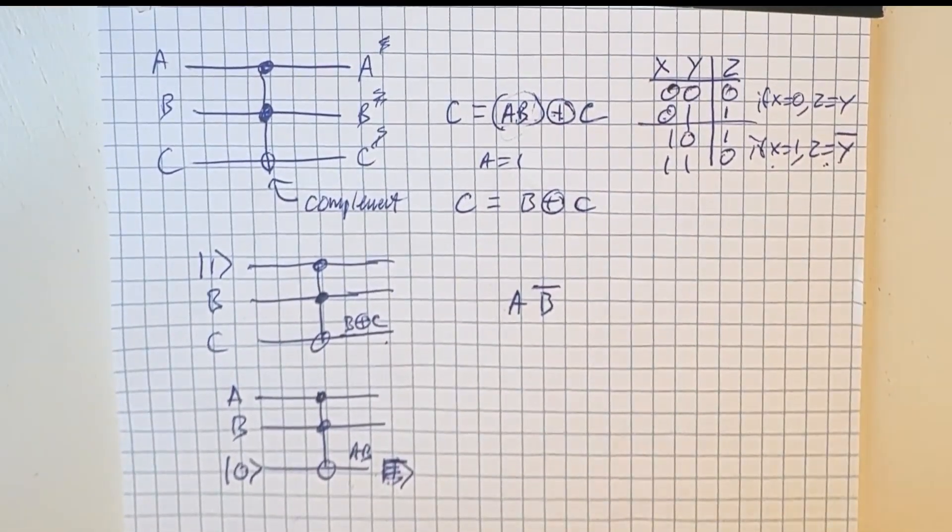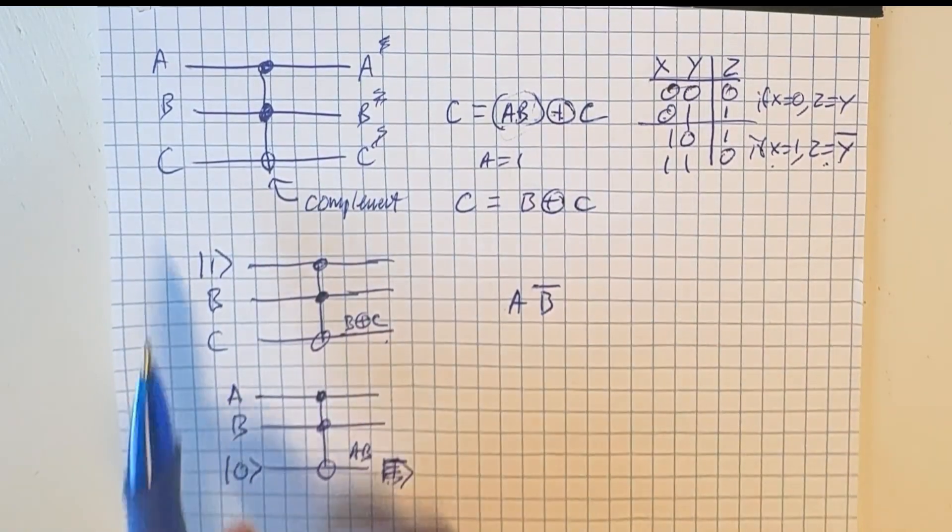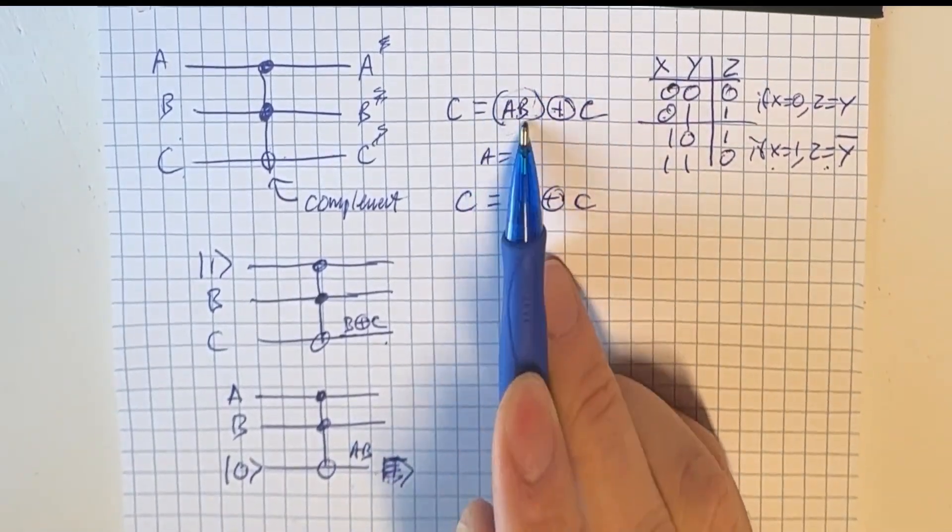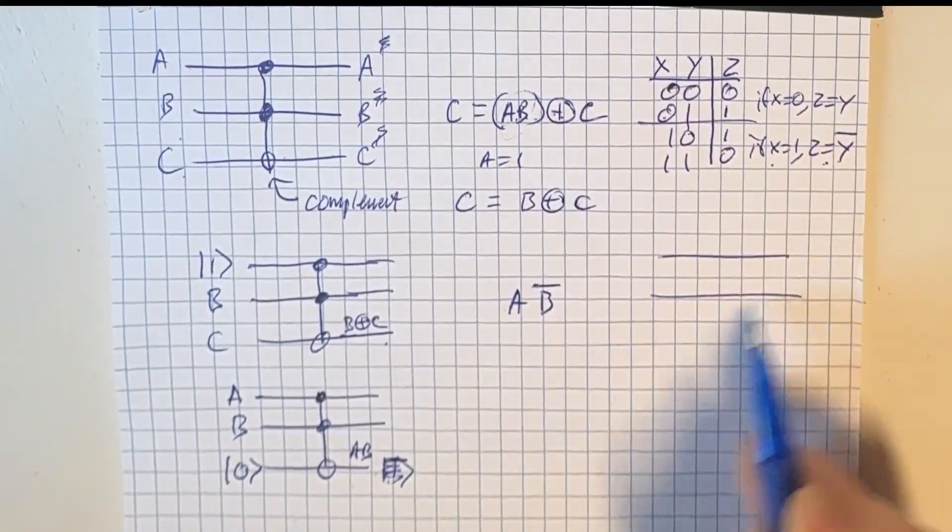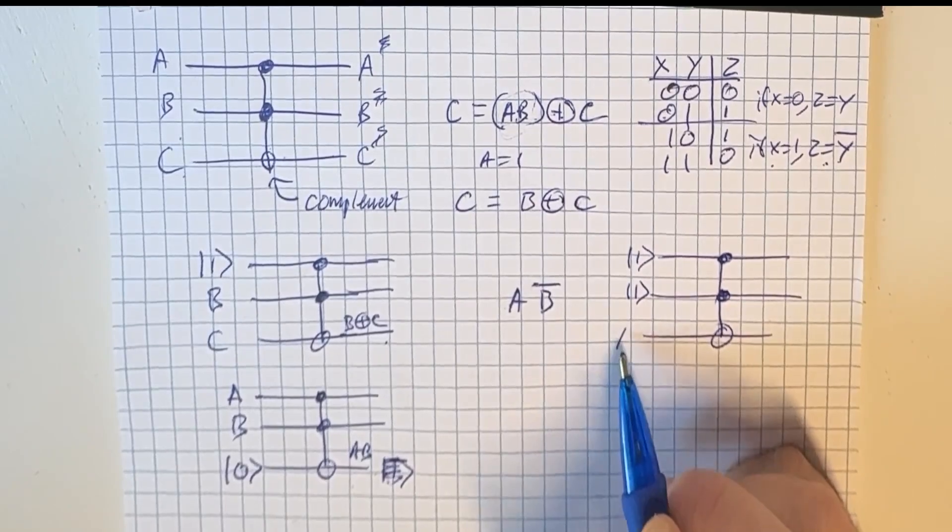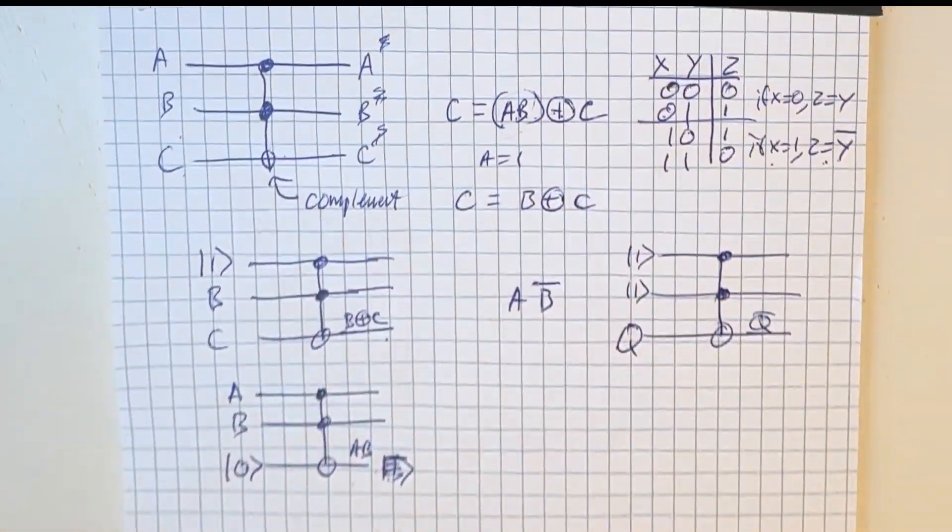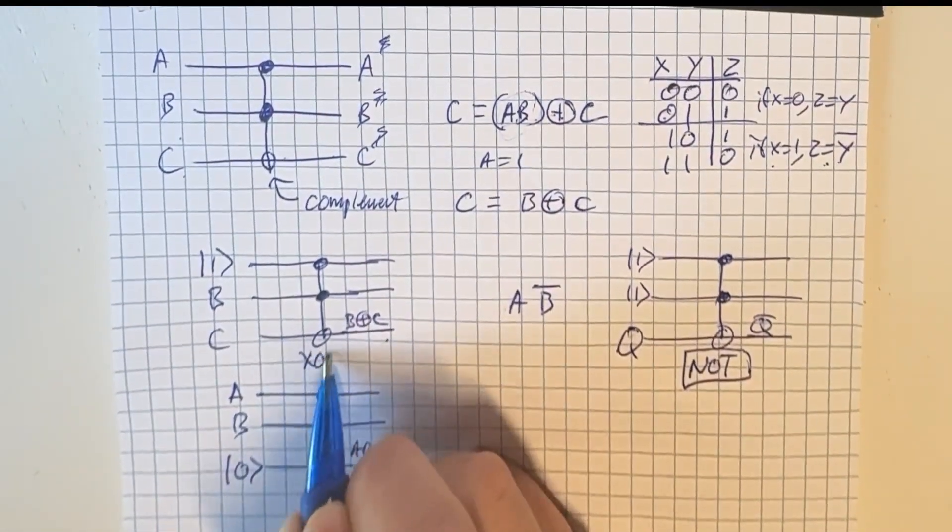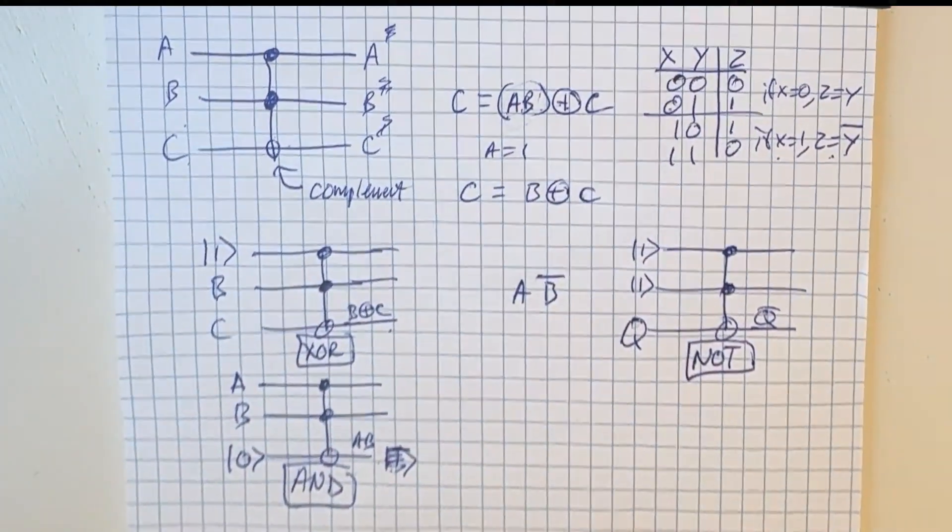So how do we do an inversion? Well, an inversion is just putting both A and B as 1. And then C will always flip to C bar. Because if A and B is 1, then that is a 1 exclusive OR with C, which means it flips. So here's an inversion. If we set these both to 1, then whatever is on, let's call this Q, will become Q bar. So that's an inversion. And this is an XOR. And this is an AND. So those are all simple ways to do some of our classical gates.